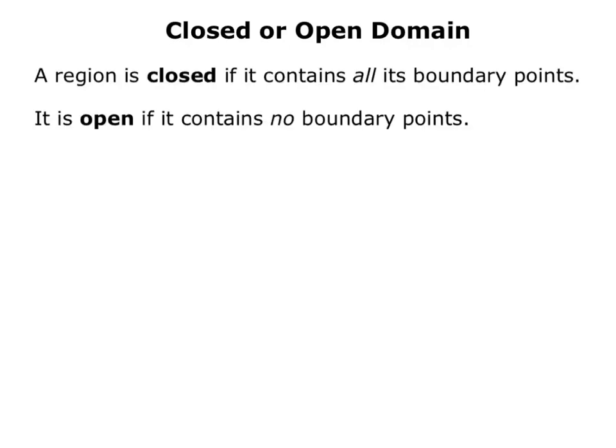The next property that we'll discuss is whether a domain region is closed or open. A region is closed if it contains all of its boundary points. It is open if it contains no boundary points.